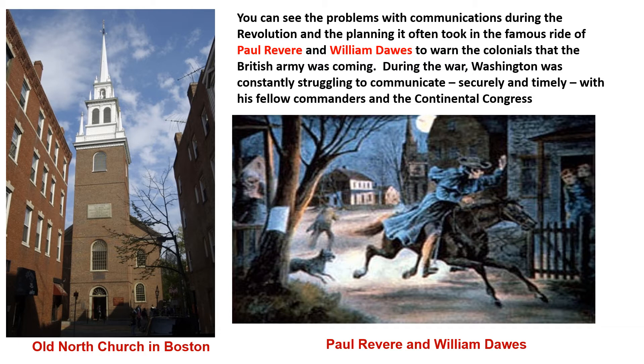Starting with the revolution, communications remained primitive, and you can certainly see the problems with communications during the revolution and the planning it often took to coordinate a resistance. For example, look at the famous ride of Paul Revere and William Dawes to warn the colonials that the British Army was coming. They had to get that information there quick, and it took some effort. During the war, Washington was constantly struggling to communicate securely and timely with his fellow commanders in the Continental Congress.